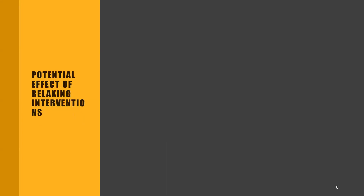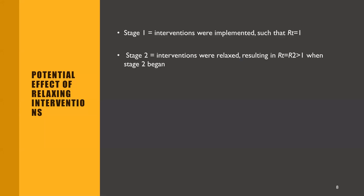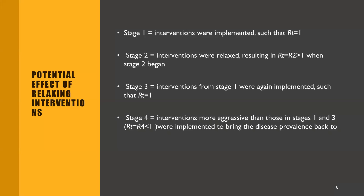The current problem is what effects can happen once we relax interventions. There are four stages: Stage one — interventions are implemented so that RT equals one. Stage two — interventions are relaxed, epidemic severity increases, and RT becomes more than one. Stage three — stage-one interventions are re-implemented so the epidemic is brought under control. Stage four — interventions become more aggressive than in stages one and three, RT drops below one, and the epidemic shrinks.